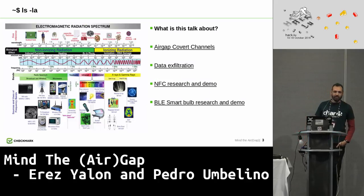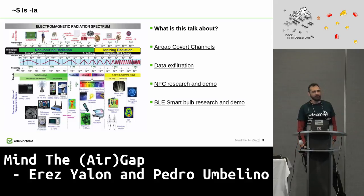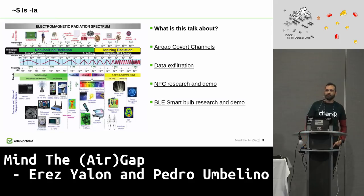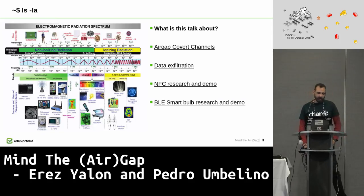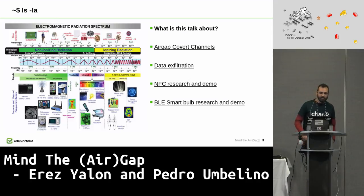So what's this talk going to be about? I'm going to talk about air gaps, air gap covert channels, data exfiltration methods, some examples of what's been done — the research that has been done in the past and now. And I'm going to present hopefully two live demos about NFC and Bluetooth Low Energy smart bulbs and let's see how it goes.